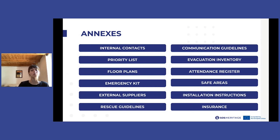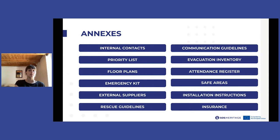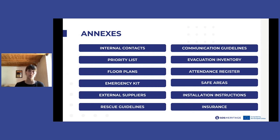The floor plans of the entire museum with a graphic indication of the location of the priorities inside the museum spaces. Then the emergency kits — the safety kits with emergency materials and their location inside the building, both for the safety of people (for example, PPEs) and for the handling and packing of the artworks.